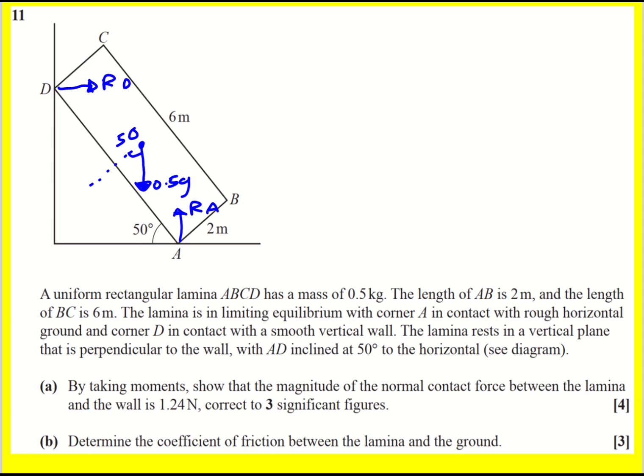The lamina is in limiting equilibrium, with corner A in contact with rough horizontal ground. There's going to be a normal reaction coming from that, so I'll label that RA. And then corner D is in contact with a smooth vertical wall. This is going to be pushing back like that, RD. Now for this to be in limiting equilibrium, we're going to have to have friction going to the left. So I'll call this FA, because it's friction due to what's happening at A.